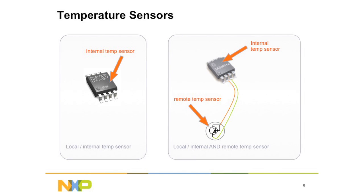Temperature sensor basics: a silicon diode or diode-connected transistor responds to temperature changes, and this signal is converted to digital data by a precision delta-sigma analog-to-digital converter. The resulting data is sent upon request over the popular I2C or SMBus two-wire communications bus under the control of the bus master.